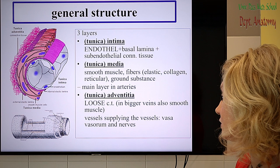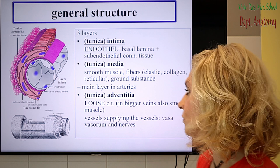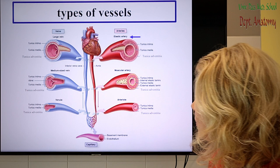The adventitia is loose connective tissue with all its typical components. Bigger vessels have even vessels supplying the vessel wall itself. These are called vasa vasorum — the vessels of the vessels, word by word.